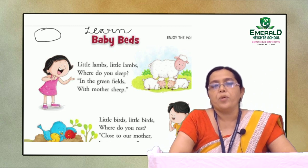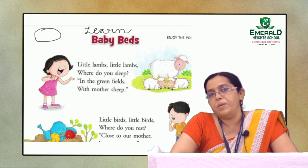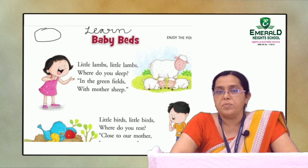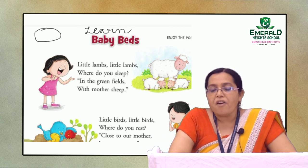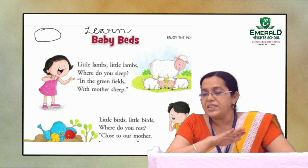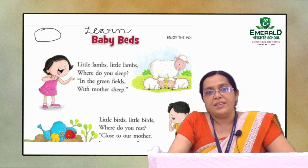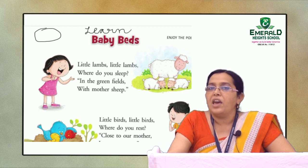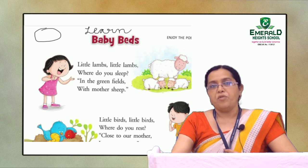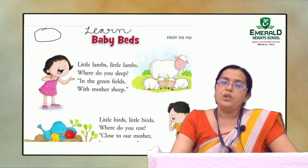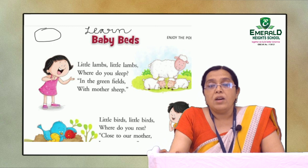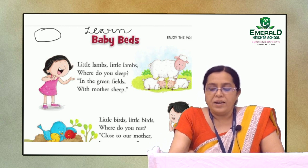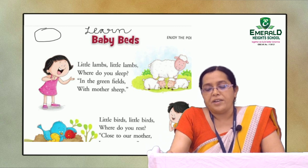This is a very interesting poem called 'Baby Beds.' Baby means young ones, and beds means a flat surface or layer on which something rests or is laid. Everyone has a bed at home where you go to sleep. In this poem you will learn about the baby's bed of a sheep, a bird, and a baby.